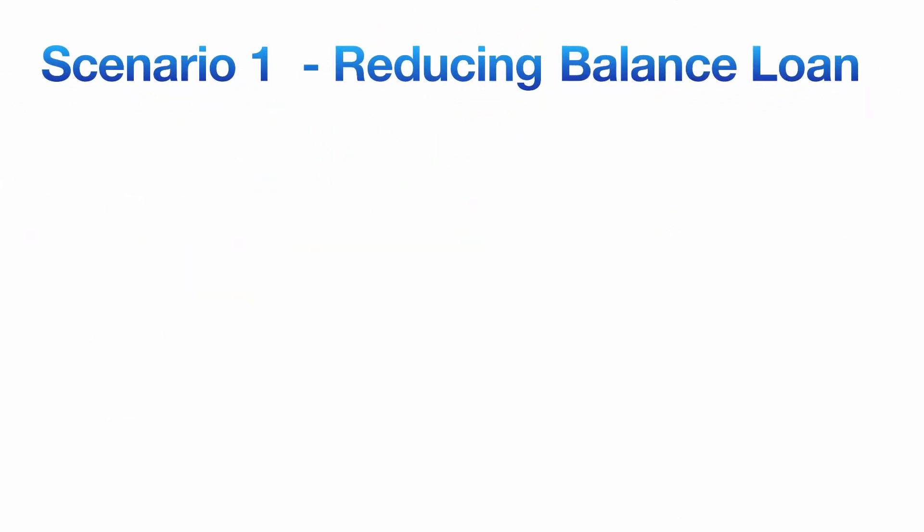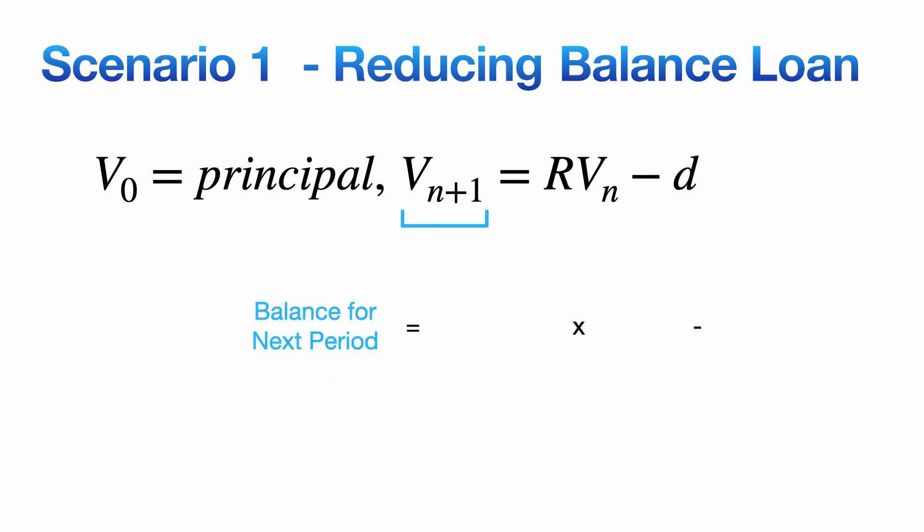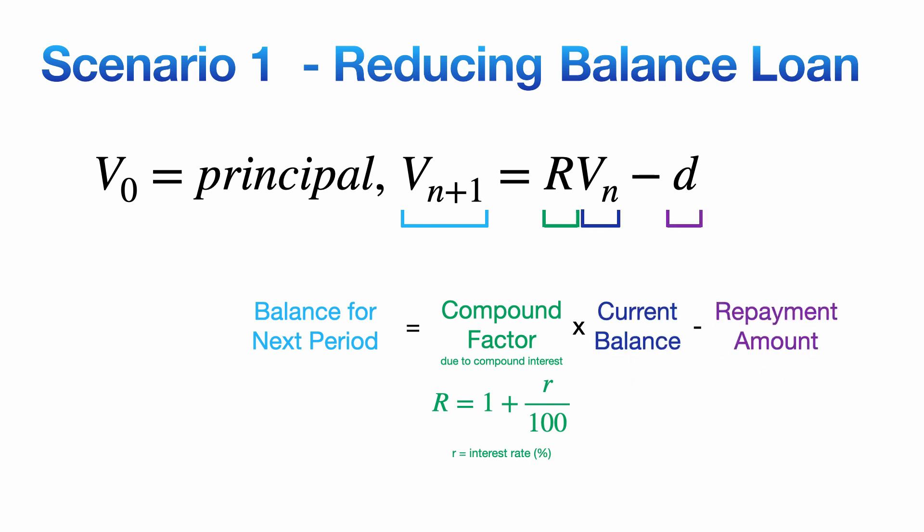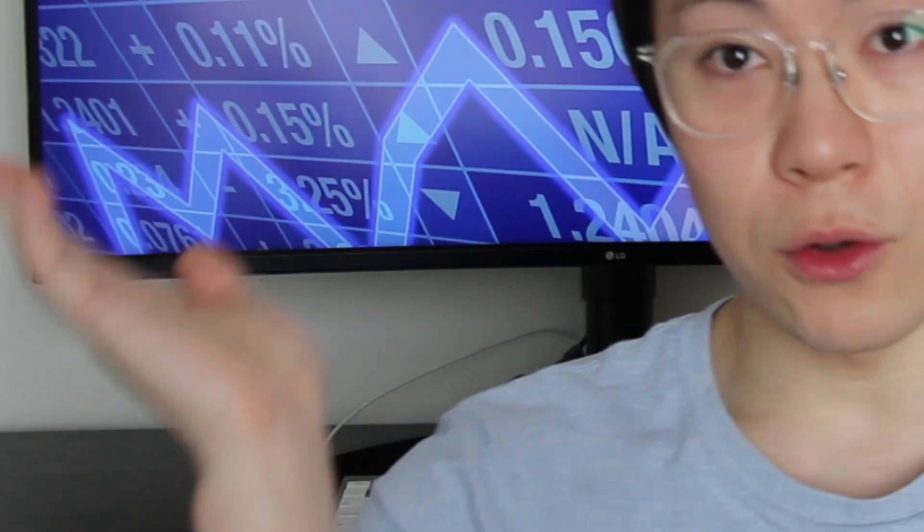Here's the recurrence relation for a reducing balance loan, where the balance for the next period can be determined essentially by the compound factor, because we're using compound interest, multiplied by the current balance, and then subtracted by D, which is the repayment amount you make per period. Phew. Alright, I know that scenario 1 was hard to take in, but I promise that the next few scenarios will be a lot easier to digest.